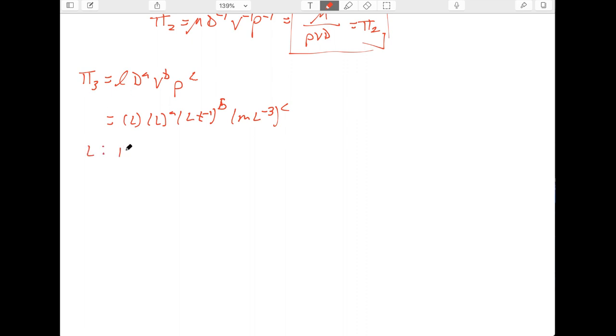So that gets us three equations again, one for length, which says one plus A plus B minus three C, all has to equal zero. Time only shows up once, so minus B is equal to zero, and mass also only shows up once as C. So that tells us C is equal to zero, this tells us B is equal to zero, sub those in here, and it tells us that A is equal to minus one. And so pi three just comes out to be L D to the minus one, V to the zero, rho to the zero, which is just L over D, pi three.